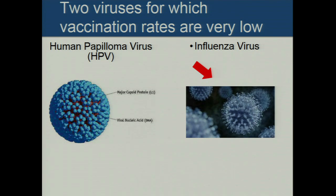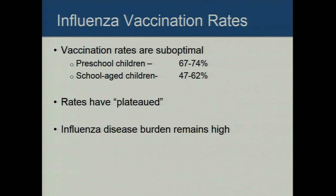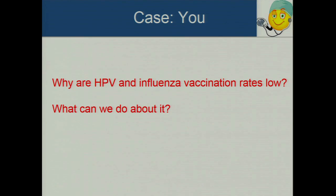Turning to influenza: we talked about the burden of flu disease and the fact that the vaccine is moderately effective but not perfect. The problem is vaccination rates are suboptimal — we just can't seem to bump this much higher. Among preschool kids, around 67 to 74% are vaccinated; among school-age kids, only about half are vaccinated. Rates have plateaued and influenza disease burden remains higher than it should be. If you're running a practice trying to practice population-based medicine, you may ask: why are HPV and flu vaccination rates low, and what can I do about it?